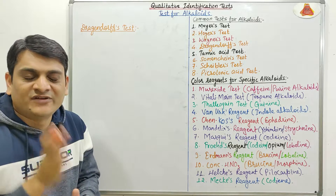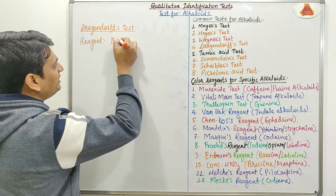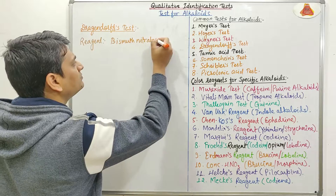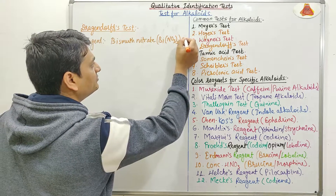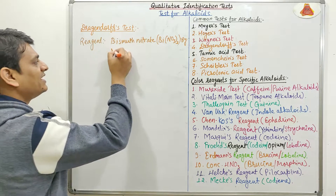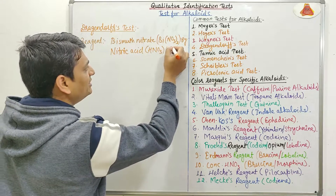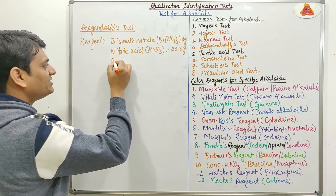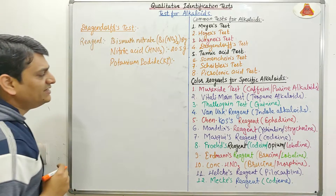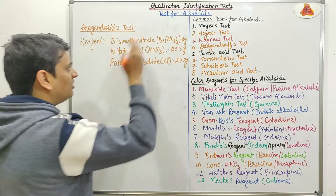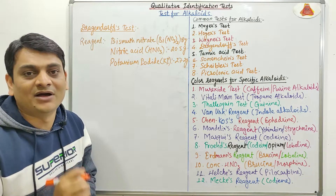In the Dragendorff's test, first I will discuss the details about the reagent. It contains bismuth nitrate — amount of bismuth nitrate is 8g. It contains nitric acid (HNO3) — amount is 20.5g. It also contains potassium iodide (KI) — amount is 27.2g. All three compounds — bismuth nitrate, nitric acid, and potassium iodide — are dissolved in 100ml of distilled water.